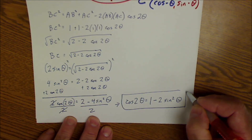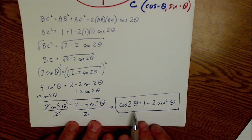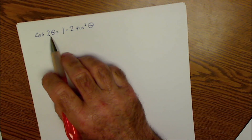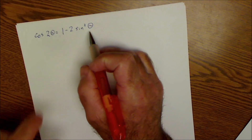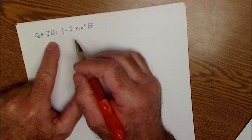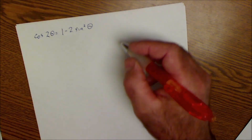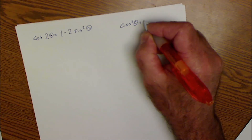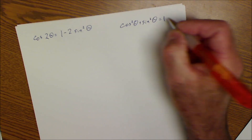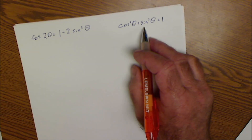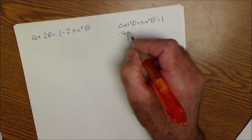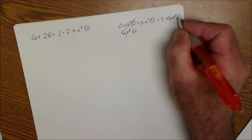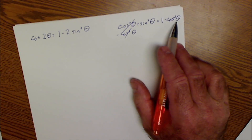So there's our double angle identity: cosine of 2θ = 1 − 2 sin²θ. That's the first version of the double angle identity for cosine of 2θ. Now I can use my Pythagorean identity, cos²θ + sin²θ = 1, and solve for sin²θ by subtracting cos²θ from both sides, giving sin²θ = 1 − cos²θ.